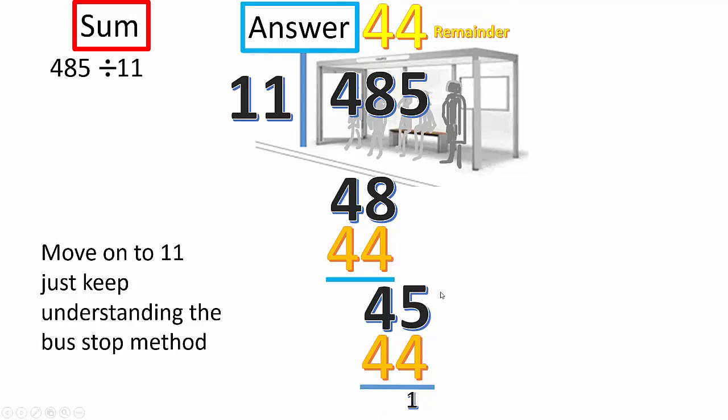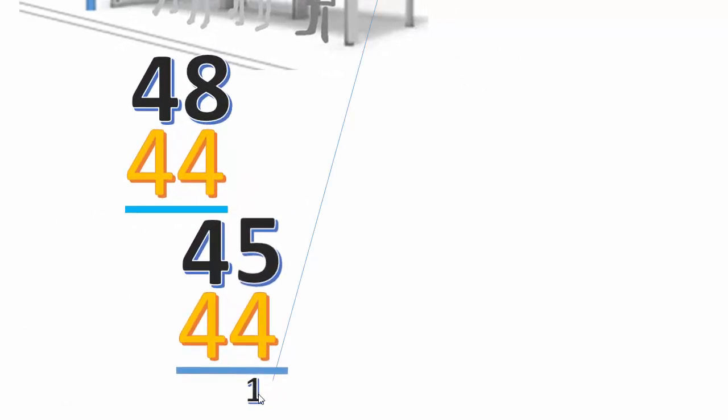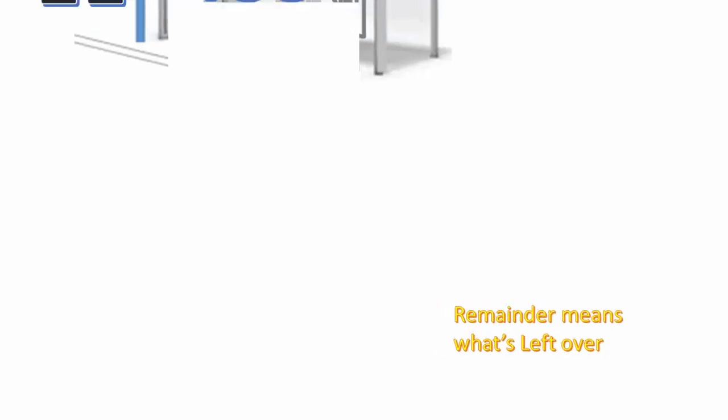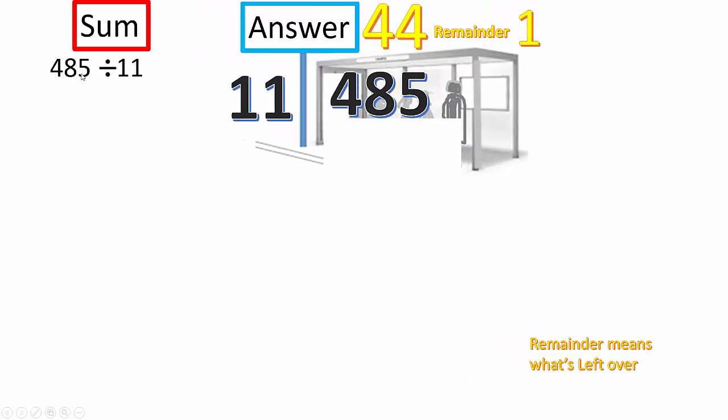So, now we have remainder. Remainder 1. So, there's the answer. 11 into 485 is 44 remainder 1.